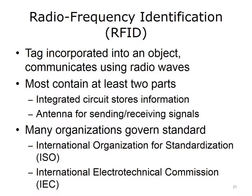The Radio Frequency Identification Standard, or RFID, incorporates an RFID tag in an object and communicates using radio waves. Most RFID tags contain at least two parts: circuitry that stores information about the tagged item, and an antenna for sending and receiving signals. Many organizations govern this standard, including the International Standards Organization, or ISO, and the International Electrotechnical Commission, or IEC. In stores, RFID tags are placed on clothing, expensive items, and items easy to shoplift. They are also heavily used for inventorying medical supplies, where tags can record and prompt inventory adjustments when medicine is removed from a cabinet.